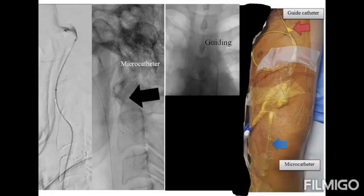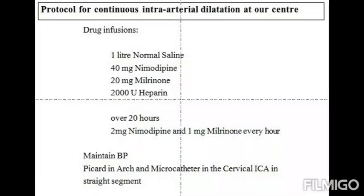Therefore, we decided to perform continuous intra-arterial dilatation. We place a microcatheter, usually an O2 microcatheter, in the cervical internal carotid artery. Once the microcatheter is placed, the picard is withdrawn into the arch of the aorta to avoid embolism. The entire setup is fixed on the thigh and knee using an IO band. Nimodipine 40 mg, milrinone 20 mg, and heparin are infused at the above-mentioned rate through the microcatheter. A saline flush is maintained through the picard. IV heparin at a rate of 10 units per kg per hour is maintained to prevent thrombus formation. The setup is changed every third day until the spasm phase is complete.